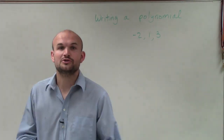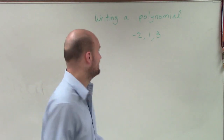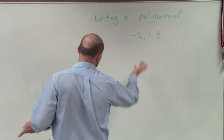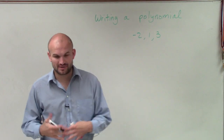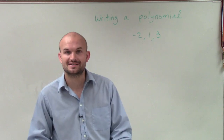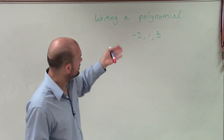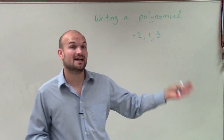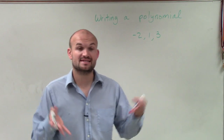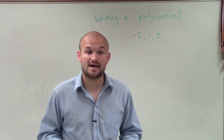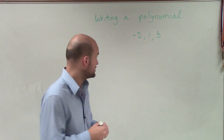Welcome. What I want to do is show you how to write a polynomial function given our zeros. In this case, we're given three zeros: x equals negative 1, x equals 1, and x equals 3, or we could say these are the x-intercepts of our polynomial function.